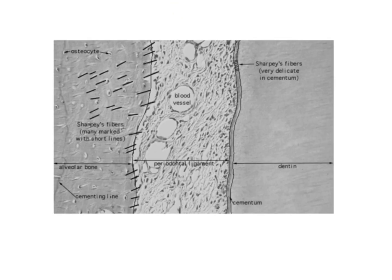When you take a cross section of the periodontal ligament along with part of the tooth structure and the alveolar bone, you will see the periodontal ligament has a typical hourglass appearance. Apart from that hourglass appearance, you will see some of the principal fibers getting extended.